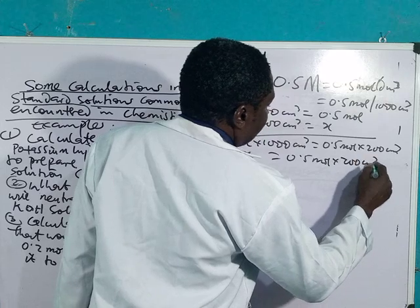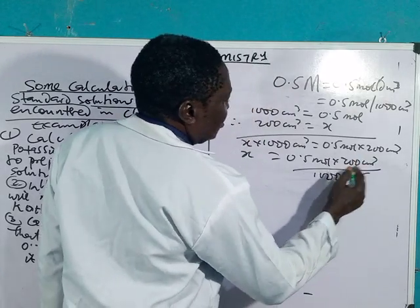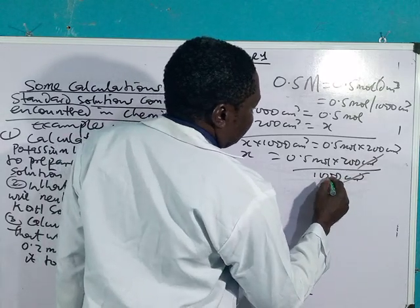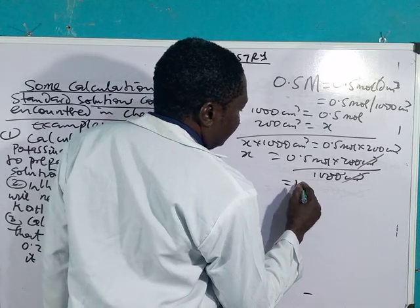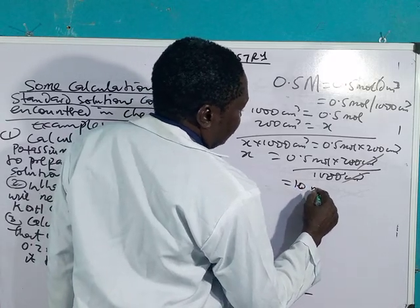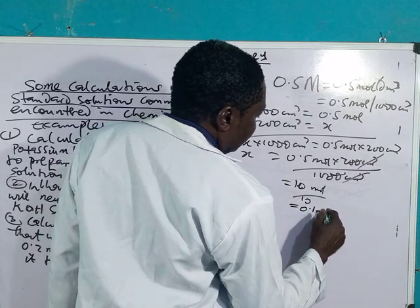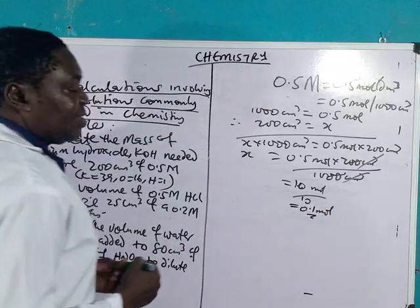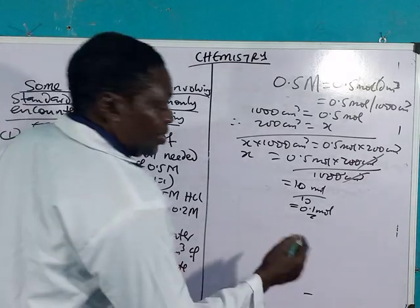So you cross multiply: x times 1000 cm³ equals 0.5 mole times 200 cm³. Dividing both sides by 1000 cm³, you get 0.1 mole.